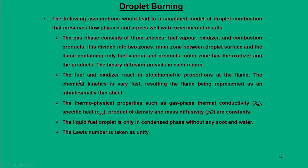The gas phase consists of three species — fuel vapour, oxidizer, and combustion products — and is divided into two zones. The inner zone (between droplet surface and flame) contains only fuel vapour and products. The outer zone contains oxidizer and products. Binary diffusion prevails in each region. Fuel and oxidizer react in stoichiometric proportion at the flame; chemical kinetics is very fast so the flame is treated as an infinitesimally thin sheet. The Lewis number is unity.